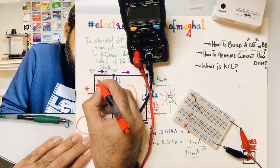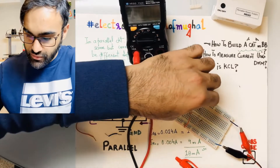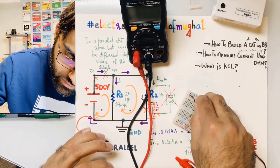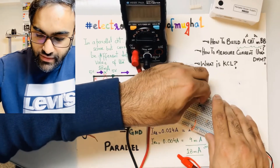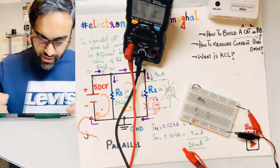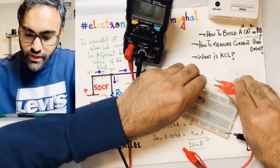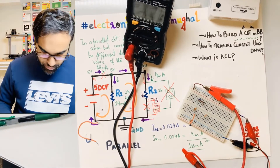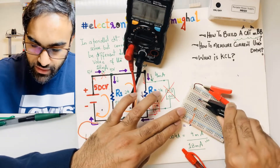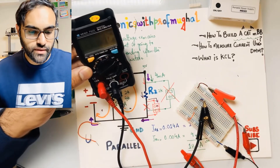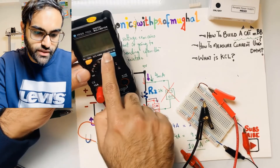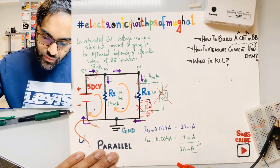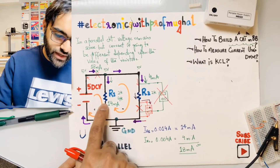Now I'm using alligator clips to supply five volts to the circuit, and I want to measure the total current, which should equal 18 milliamps. I disconnect the circuit and connect the positive cable to the multimeter in series, and the negative cable to the node on the blue wire. The reading confirms exactly 18 milliamps total current.